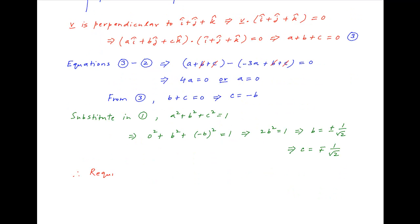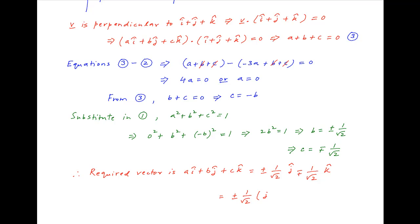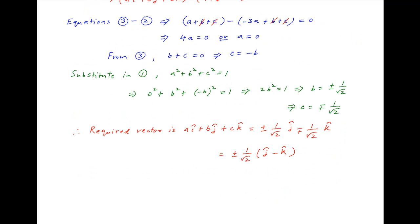Therefore the desired vector v, which is equal to ai plus bj plus ck, is equal to plus or minus 1 upon root 2 times the unit vector j, minus plus 1 upon root 2 times the unit vector k. This is equal to plus or minus 1 upon root 2 times (j minus k), which is the required answer.